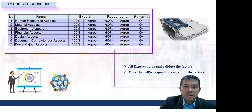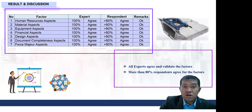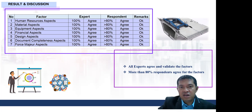For the design aspect, 100% of experts agreed and more than 80% of respondents agreed — remark: OK. For document completeness, more than 80% of respondents agreed — remark: OK. In summary, all aspects were agreed upon and validated, with more than 80% of respondents agreeing for each factor.